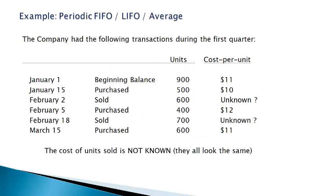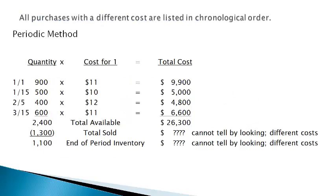Let's take a look at an example of how to use the FIFO, LIFO, and weighted average inventory methods to compute the value of inventory and cost of goods sold. Notice the purchases and sales that occurred during the quarter. There is no cost beside the units sold because each item looks the same and the cost of the particular item sold is not known. The first step is to list all purchases of the same item with a different cost in chronological order. Add the beginning inventory and purchases to get the total available. Subtract the total sold to get the quantity of items in inventory at the end of the period.